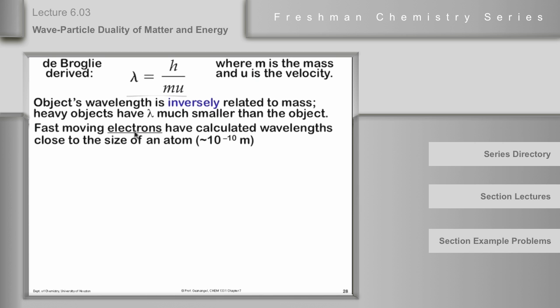Now, what he showed was that fast-moving electrons, where M is very small, have a de Broglie calculated wavelength around 10 to minus 10 meters. And the significance of that is that that's roughly the size of an atom. And that being the case, then an electron wave might have some chance of exhibiting important wave properties, and maybe that's what gives the electrons in a hydrogen atom only fixed energy levels that they can occupy.